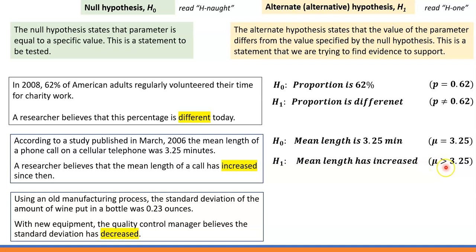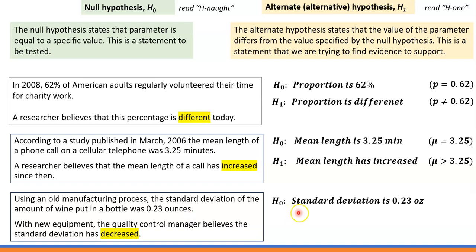The symbol we use is 'greater than.' H1: mu > 3.25. For the last example, it says that using an old manufacturing process, the standard deviation — that's the parameter — of the amount of wine put in a bottle was 0.23 ounces. That's the null hypothesis, stating that standard deviation is equal to 0.23 ounces. The alternative hypothesis is the second sentence.